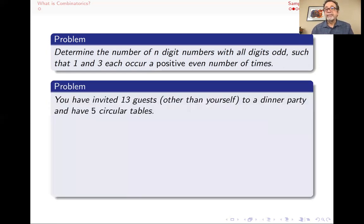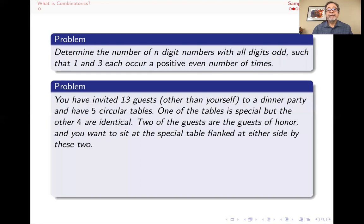Here's another counting problem. You've invited 13 guests other than yourself to a dinner party and you have seven circular tables. One of the tables is special, sort of the head table. The other four are identical. Two of the guests are guests of honor and you want to sit at the special table, flanked on either side by those two.